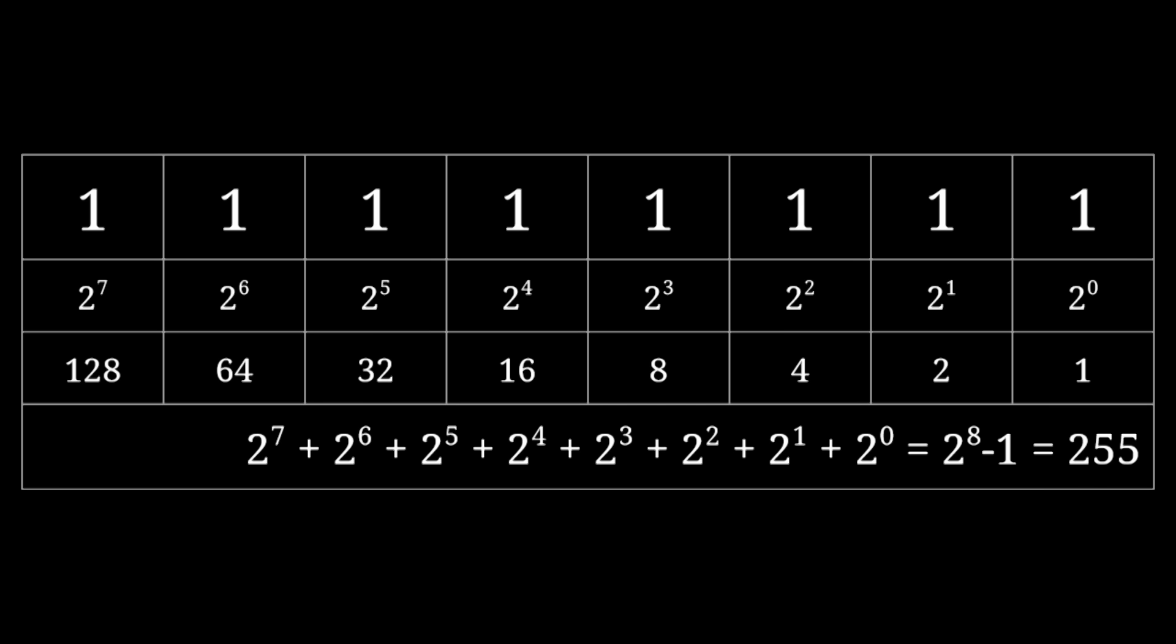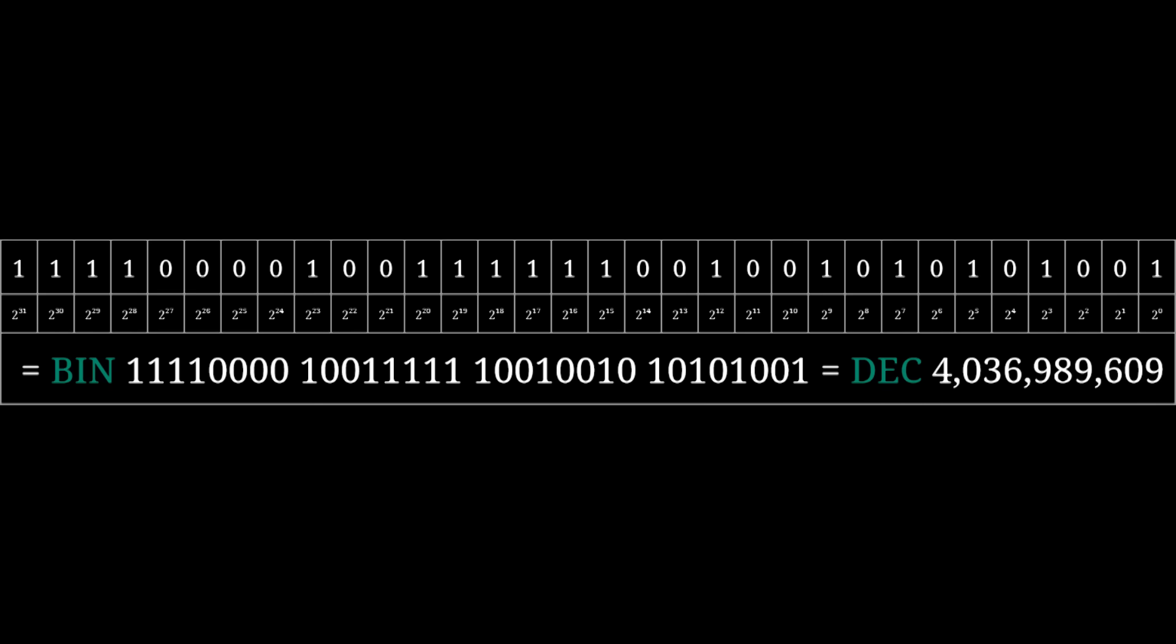This particular implementation is called an 8-bit unsigned integer. It's unsigned because there's no way to represent negative numbers. This format is very limited. One byte is not a lot of information, so when modern computers store numbers they tend to use more than just eight bits. Let's bump this up to a much more sensible 32-bit unsigned integer, with a whopping four bytes of information. With 32 bits, you can represent a much wider range of numbers, with the maximum value being over four billion.